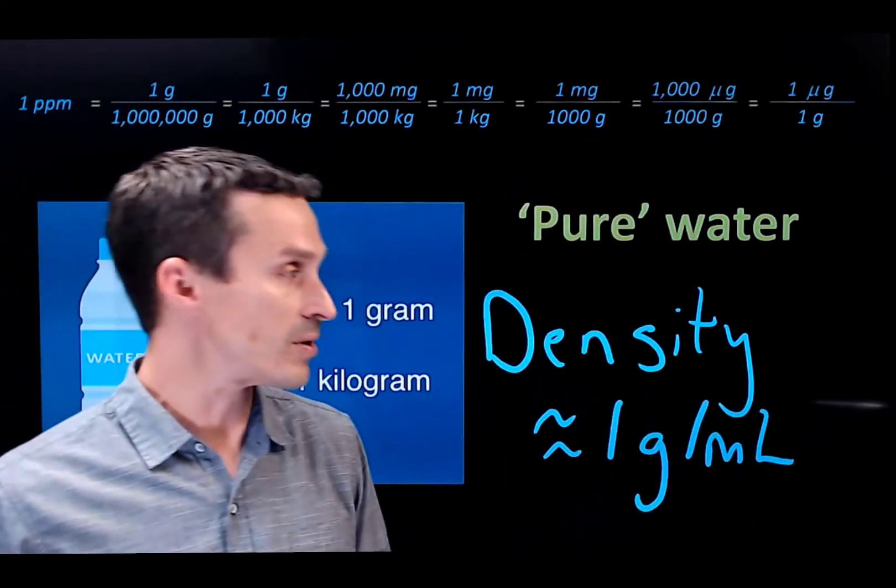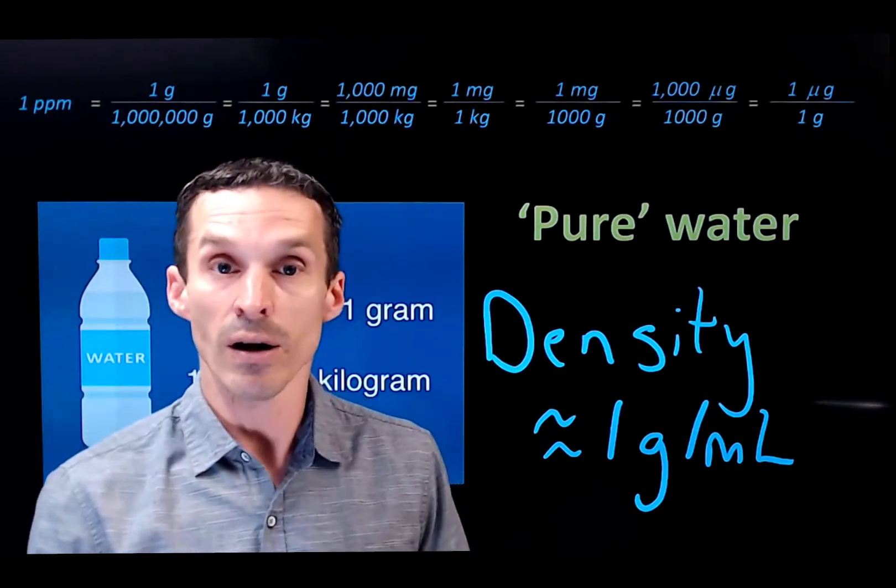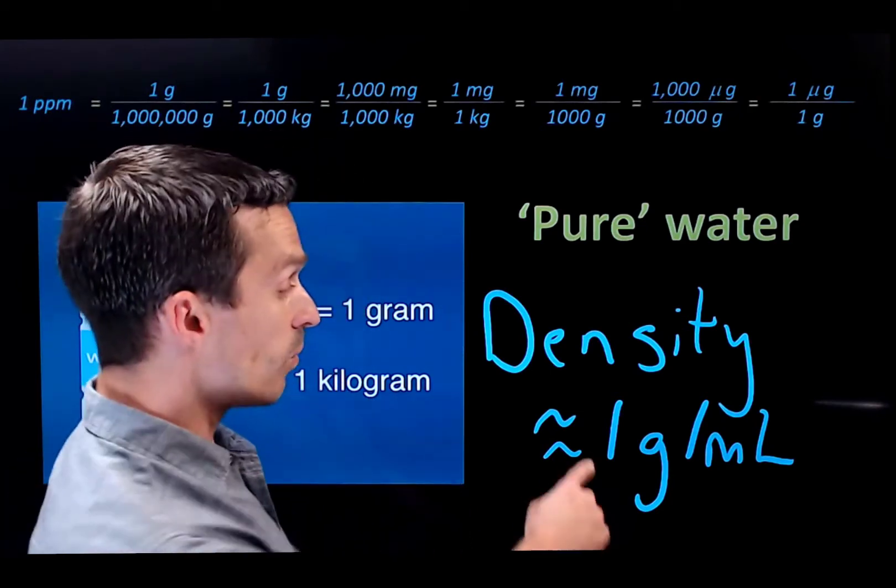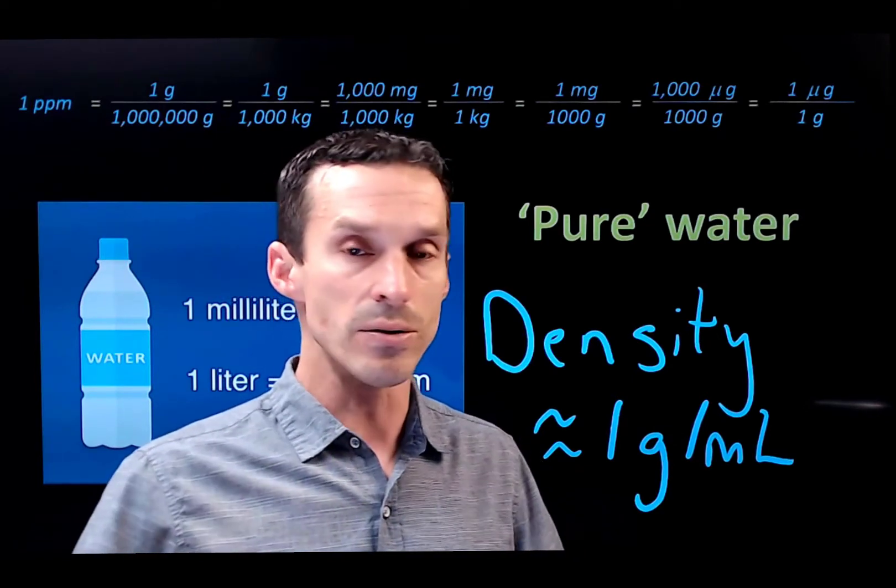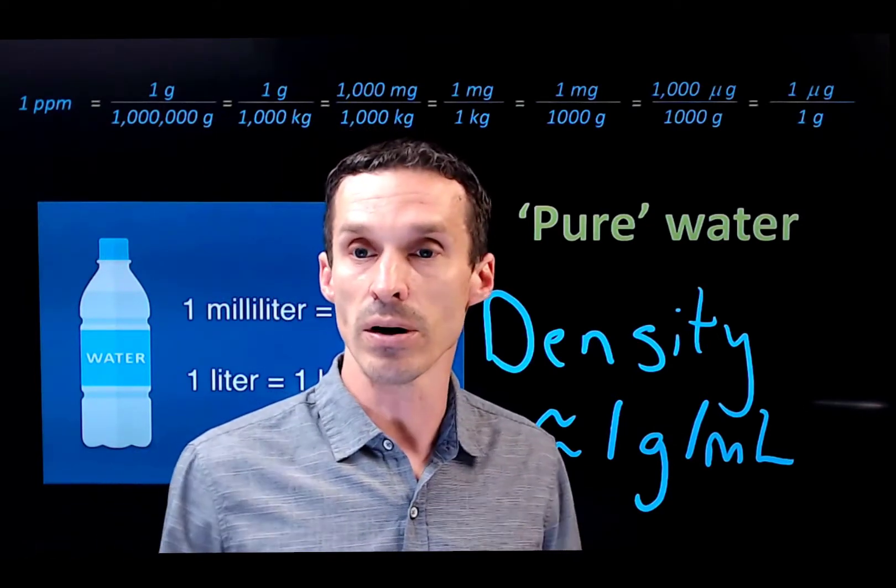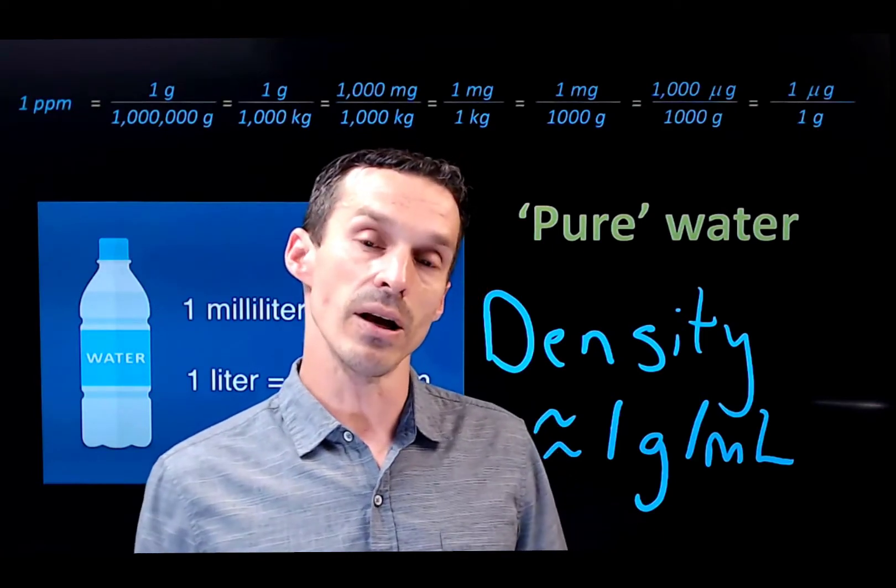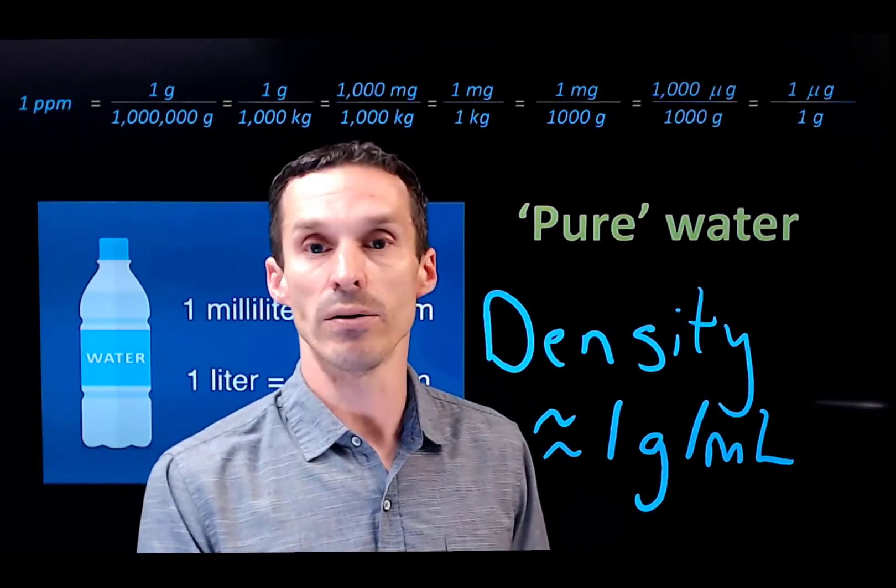You know, the density changes with temperature. But at least to one significant figure, we could say that water has a density of one gram per mL. So if I'm giving you a volume of water in mLs or liters or anything of that sort, we should know the mass of it, at least if it's hopefully mainly water, right?